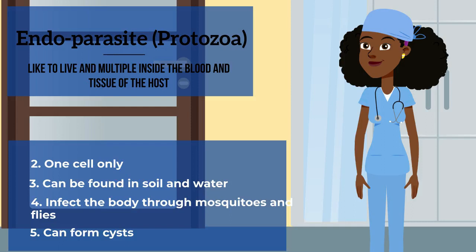Number four is if it can infect the body through mosquitoes or flies. And number five is if it can form or make cysts.